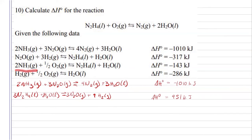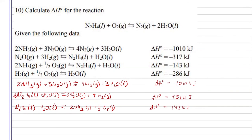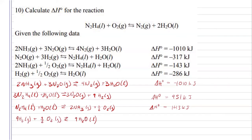My third one — I have ammonia as a reactant here, and here I have it as a reactant. In order to cancel them, since it's nowhere in the reaction that I need, I'm going to flip my third reaction. That's going to change my enthalpy from negative to positive. Now for my fourth reaction, I have hydrogen gas, half a mole of oxygen gas, and one mole of liquid water. I have nine hydrogen gases that I need to cancel, so I'm going to multiply my fourth reaction by nine. Doing that, multiplying my enthalpy by nine, will give me an enthalpy of negative 2,574 kilojoules.